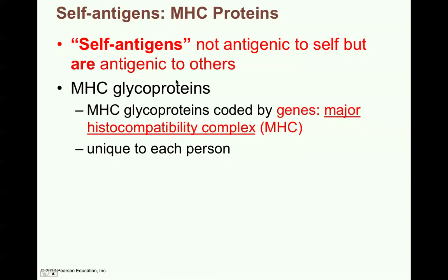Major histocompatibility complex — these are actually glycoproteins, so they're a protein with a little sugar part to it. The glycoproteins are coded by genes, and your genes are called the major histocompatibility complex in your DNA. It's unique to each person. They look at these very carefully when an individual needs to have some kind of a tissue transplant.